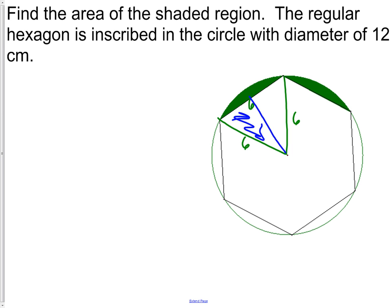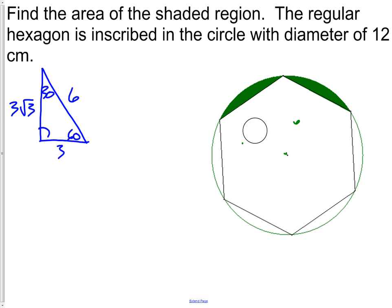We need to get the length of the apothem. The whole piece would be 6, so half of it would be 3 — that's the part from the edge of the circle to halfway through the side. The slant is 6. We'll use the fact that this is a 30-60-90 triangle: it's faster, easier, and more exact than the Pythagorean theorem once we start taking square roots. So the apothem is going to be 3 root 3.